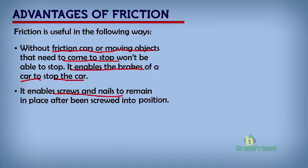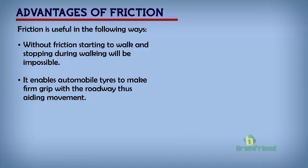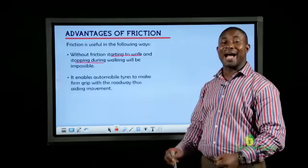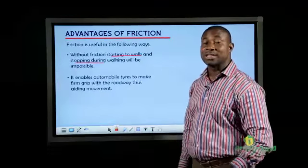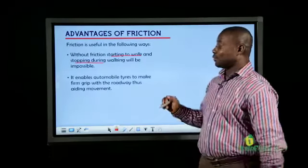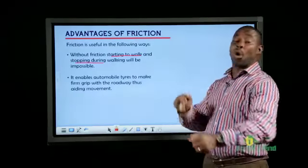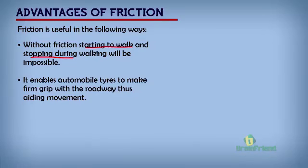Number two: screws and nails are able to be in place when we screw them in by reason of friction. Screws and nails coming into position when you screw them in or when you use a hammer to put a nail in place — it's because of friction that they remain in place. Another advantage is that without friction we will not be able to start walking or to stop when we begin to walk — starting to walk and stopping during walking would be impossible without friction.